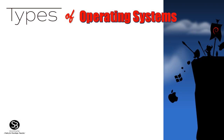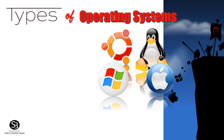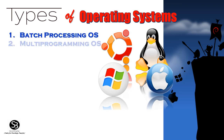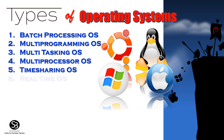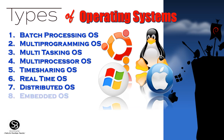Types of operating systems: Batch Processing OS, Multiprogramming OS, Multitasking OS, Multiprocessor OS, Time Sharing OS, Real-Time OS, Distributed OS, and Embedded OS.